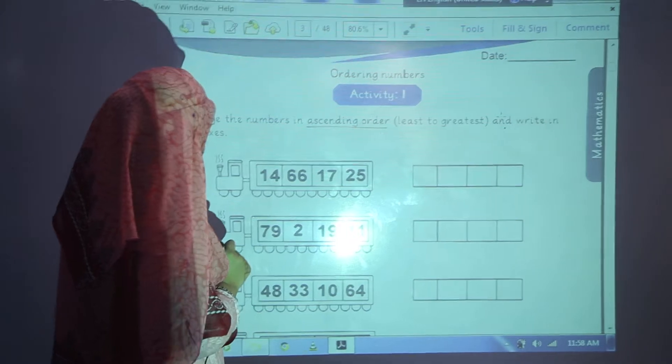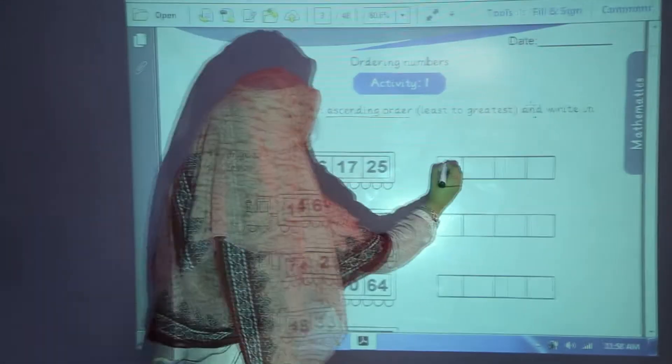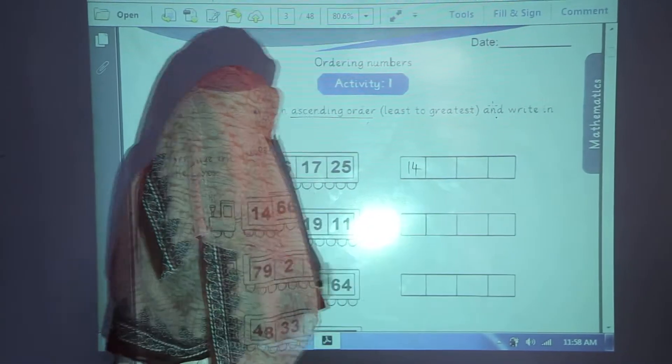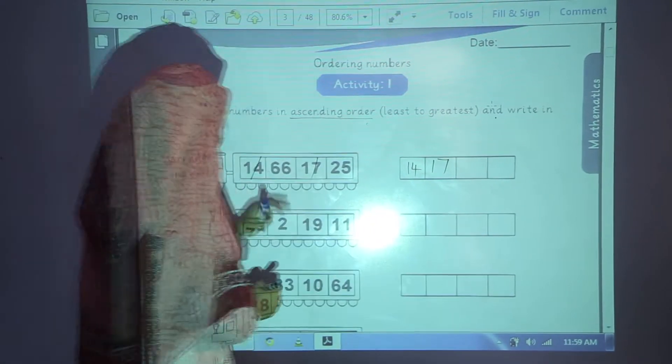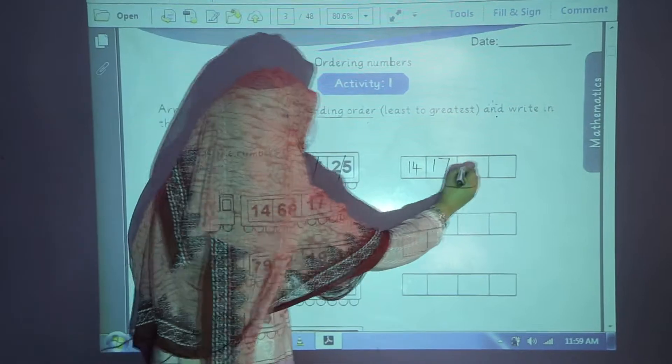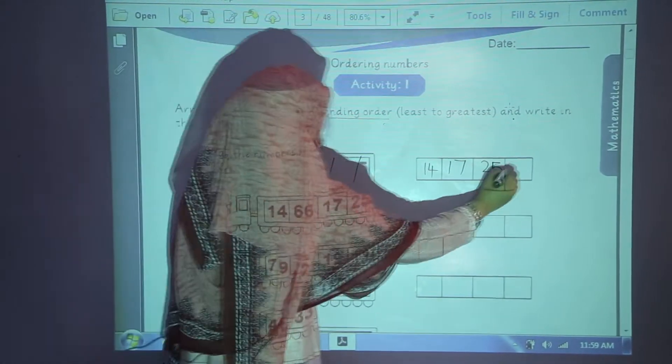Now which one is the smallest number here? 14. You will write 14 in the first box. After 14, 17. 17 in the second box. After 17, 25. 25 in the third box and in the last, 66.